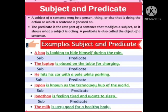Next: 'The laptop is placed on the table for charging.' What is placed on the table? The laptop. About what are we discussing? The laptop. So the laptop is the subject. What action is being performed — 'is placed on the table for charging' — so that is the predicate.